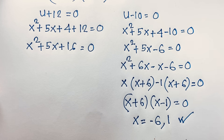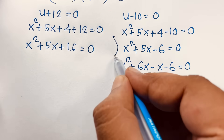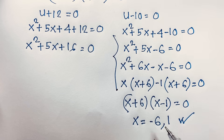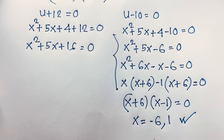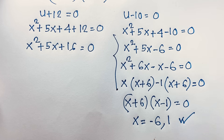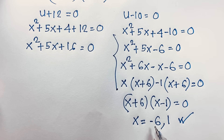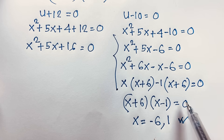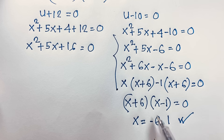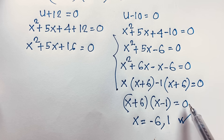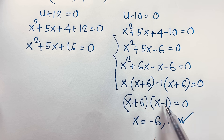From (x + 6)(x - 1) = 0, we get x = -6 and x = 1. These are both real solutions from the second quadratic equation.